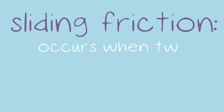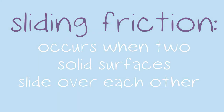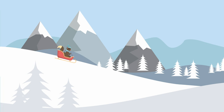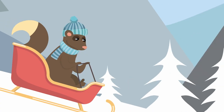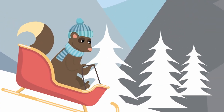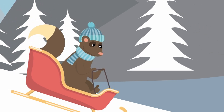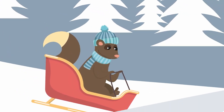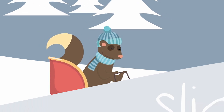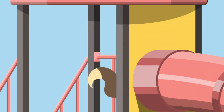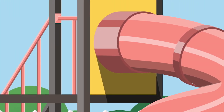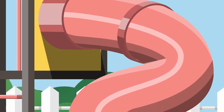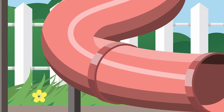Sliding friction occurs when two solid surfaces slide over each other. Sledding illustrates this perfectly — when you sled down a hill covered in snow, the solid bottom of the sled slides across the solid-packed snow. Another example is a slide: when you go down a slide, the solid of your body moves across the plastic or metal material of the slide.